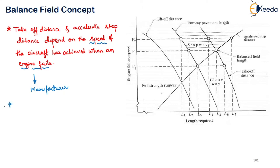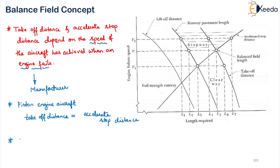Now for piston engine aircraft, the full strength pavement is provided for the entire takeoff distance as well as the accelerate stop distance. Also, the designed engine failure speed for such type of aircraft is chosen so that those two distances — the takeoff distance and the accelerate stop distance — are equal. That is what we decide in case of piston engine aircraft. Generally, the basic runway length in airports is decided by the balance field concept.